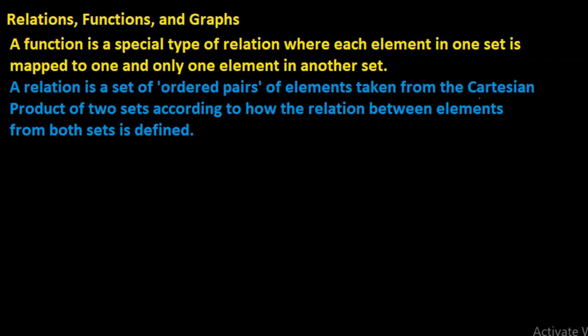Now we want to look at relations, functions, and how we graph these functions. A function is a special type of relation. A relation is a set of ordered pairs of elements taken from the Cartesian product of two sets, according to how the relation between elements from both sets is defined.